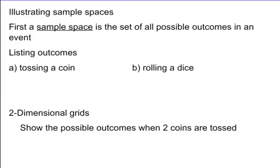If we have a coin, we have two different outcomes that there could be — either heads or tails. And when we list our possible outcomes, we want to list how many there are. So we could have heads or tails if we're flipping one coin.